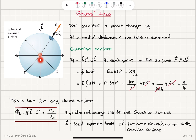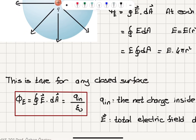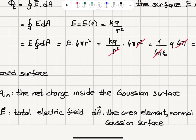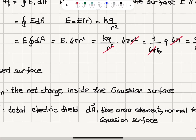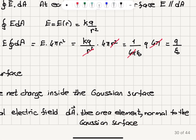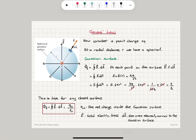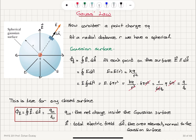This result — that the electrical flux for a closed surface containing a charge q equals q over ε₀ — is actually true for any closed surface. The electrical flux, the closed surface integral of E·dA, equals the total charge enclosed by that surface divided by ε₀. Here, q_in is the net charge inside the Gaussian surface, E is the total electric field, and dA is the differential area element normal to the Gaussian surface. So the flux φ_e equals the integral of E·dA, which gives us q_in over ε₀.